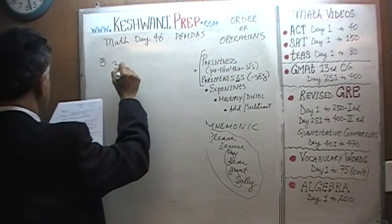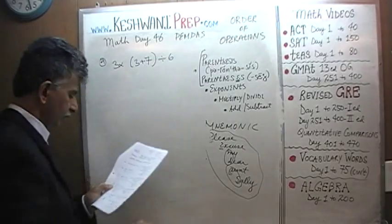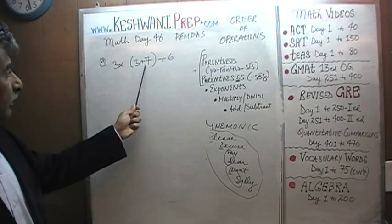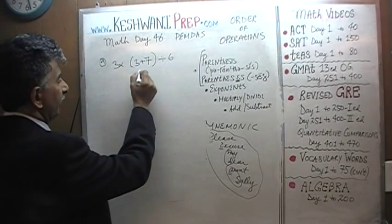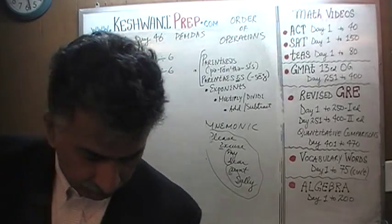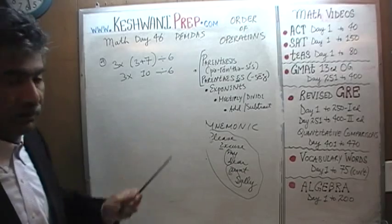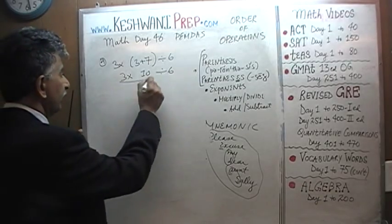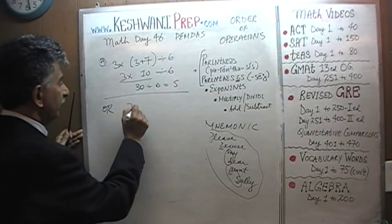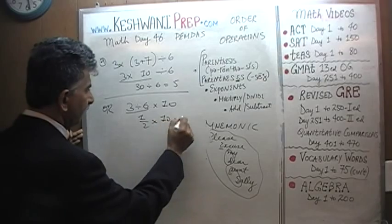Number 4: 3 × (3 + 7) ÷ 6. As always we take care of our parentheses first. 3 plus 7 is 10, so now we have 3 times 10 divided by 6. Multiplication and division have the same priority so it doesn't matter which order. We could do 3 × 10 = 30, divided by 6 = 5. Or we could do 3 ÷ 6 = one half, and half of 10 is 5. Either way we get the same answer.